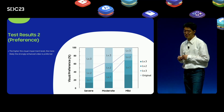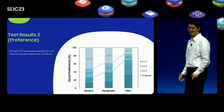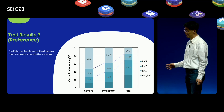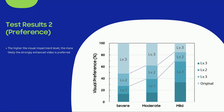This graph shows the preference ratio for each video enhancement level. The severe and moderate visual impairment group preferred level 3, that is the strong enhancement effect, while the mild visual impairment group preferred level 1, that is the soft enhancement effect. In particular, as the degree of visual impairment increases, the preference for level 2 or level 3 increases. In conclusion, it can be assumed that the higher the visual impairment level, the more likely strongly enhanced video is preferred.